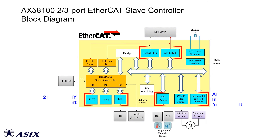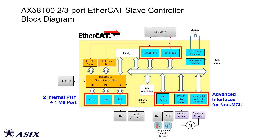This is the AX58100 EtherCAT Slave controller block diagram. AX58100 also supports SPI Master/Slave and local bus PDI interfaces for designers to easily implement standard EtherCAT Slave communication functionalities on traditional non-EtherCAT Slave industrial platforms.